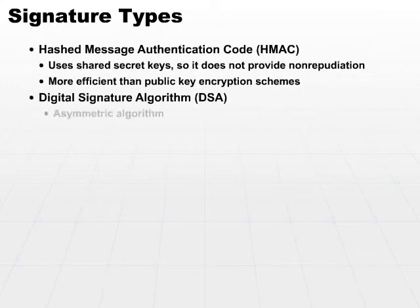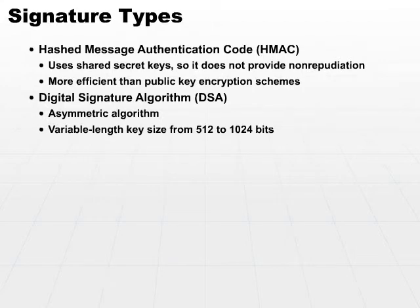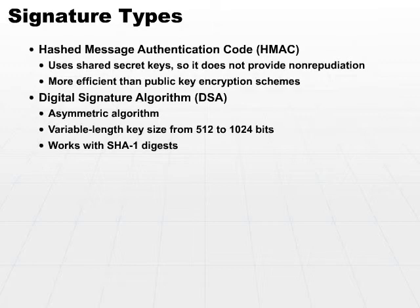The Digital Signature Algorithm, or DSA, is an asymmetric algorithm. So instead of using shared secret or symmetric keys, it uses asymmetric keys. It has a variable length key size that goes from 512 bits all the way up to 1024 bits. And it works with the SHA-1 digest. So DSA incorporates or works best with the SHA digest — we use digest creation via the SHA hashing algorithm.